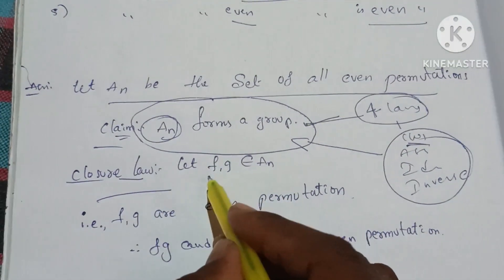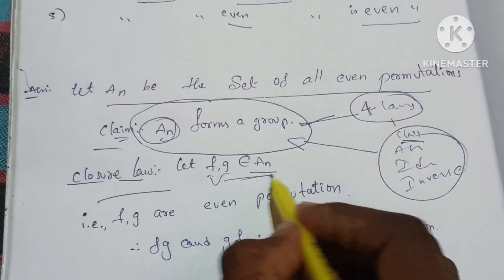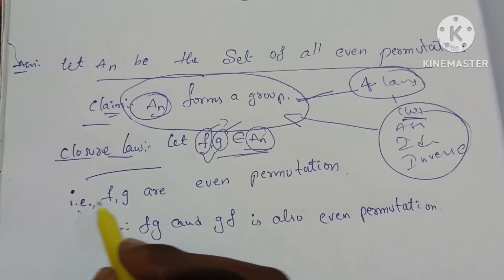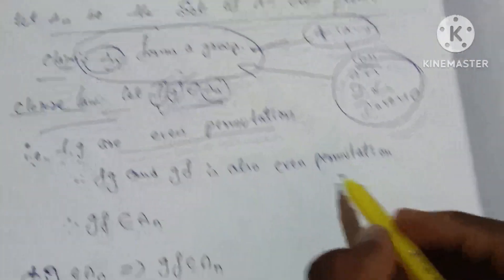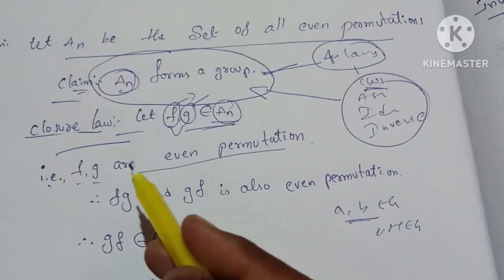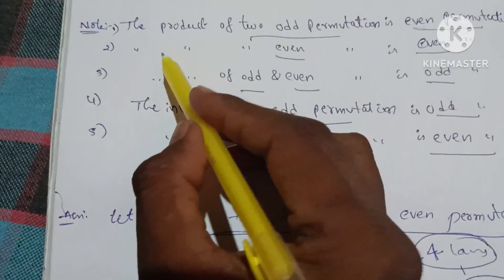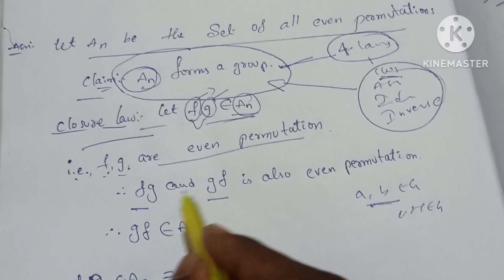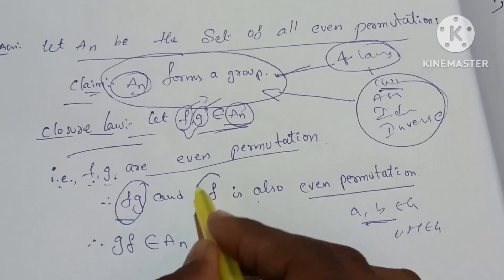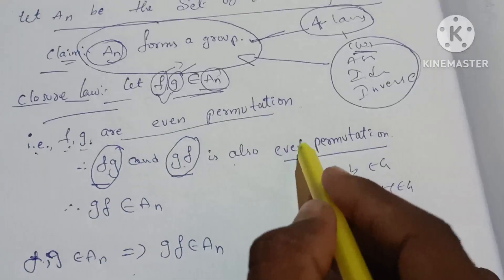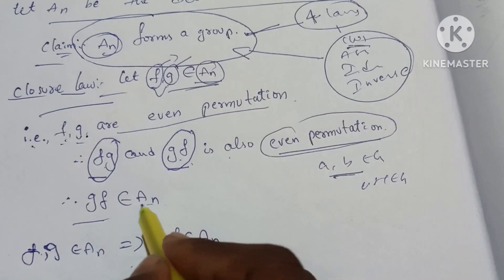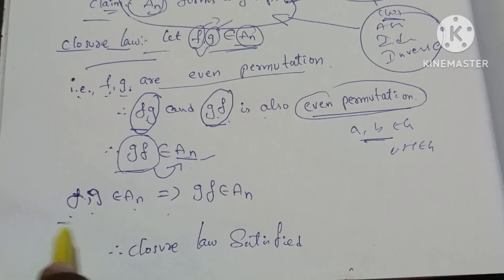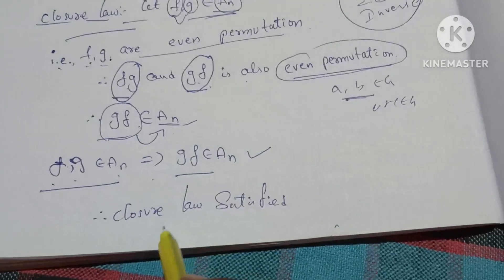Closure law: Let f, g belong to Aₙ. Since Aₙ is the set of all even permutations, f and g are even permutations. The product of two even permutations is an even permutation. Therefore fg is also an even permutation, so fg belongs to Aₙ. Thus the closure law is satisfied.